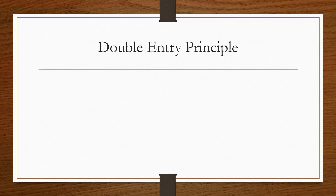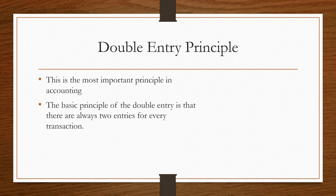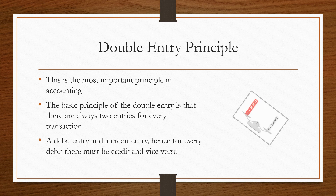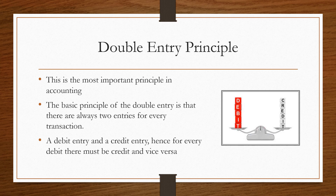The first principle we are going to go through is called the double entry principle. This is the most important principle in accounting. The principle states that for every transaction that is recorded, there are two entries that need to be put through the general ledger — a debit entry and a credit entry. Hence, for every debit there must always be a credit and vice versa. That's how the books are balanced.